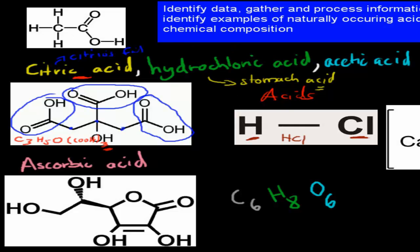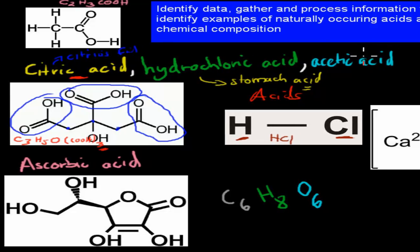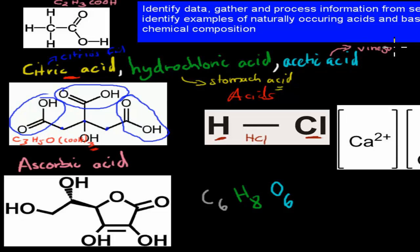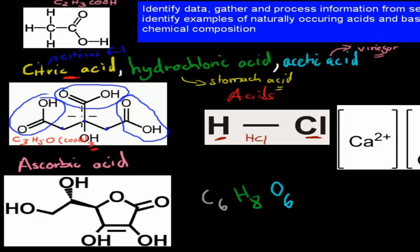Next one is acetic acid. The actual chemical formula for acetic acid is C2H3COOH. That COOH is the same COOH group we saw before. Now, what kind of uses does this have? Well, it's actually found in vinegar. Vinegar itself is acetic acid, which is why it has that sour taste. One easy way to realize that these are naturally occurring acids is that they have carbons in their chain, both for citric acid and acetic acid. Carbons usually indicate organic, and thereby natural compounds.